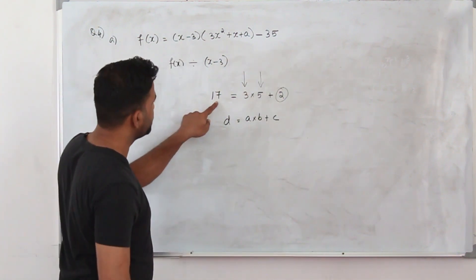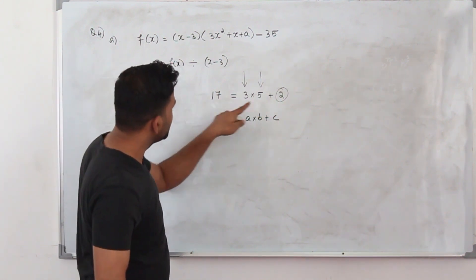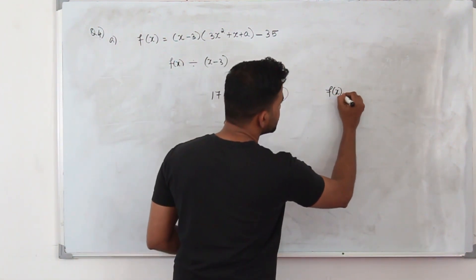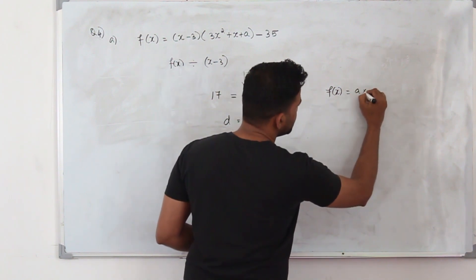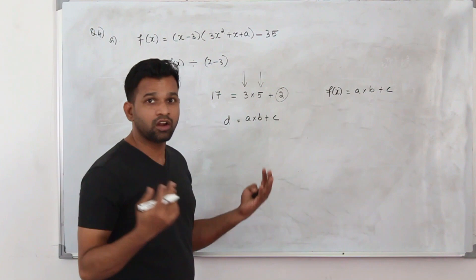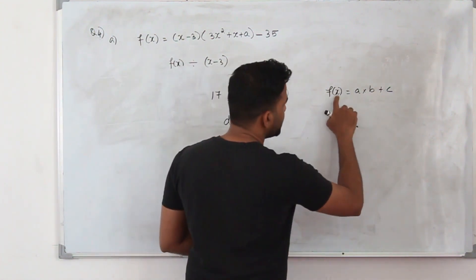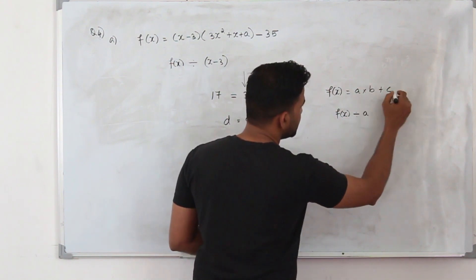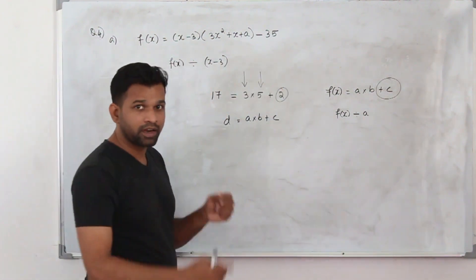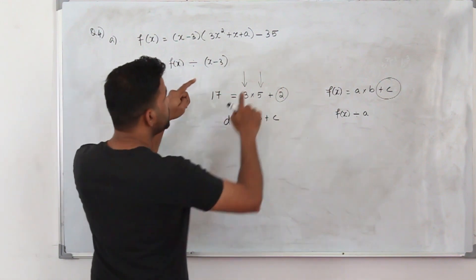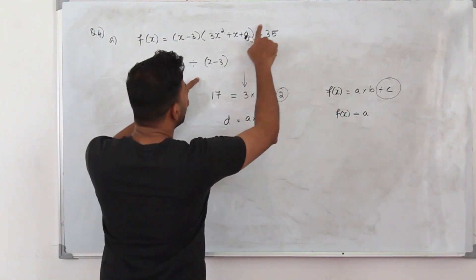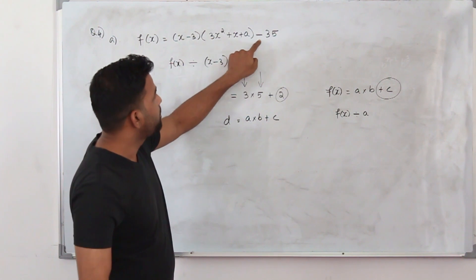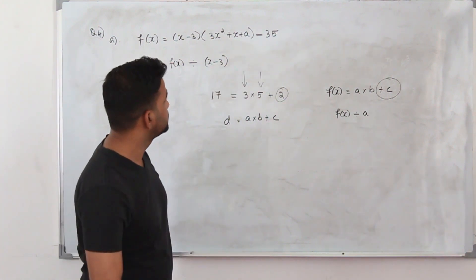If you divide 17 by 3, the remainder is 2. If you divide 17 by 5, the remainder is also 2. In general, if f(x) can be written as A times B plus C — where A, B, C are functions of x — then C is the remainder when f(x) is divided by A or B. So straight away, minus 35 is the remainder. You don't need to do anything else; just write minus 35.